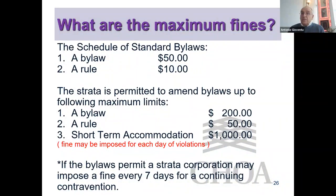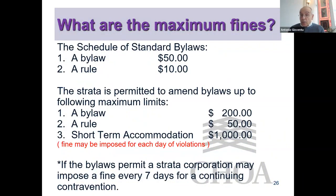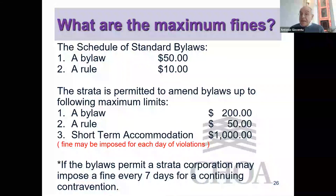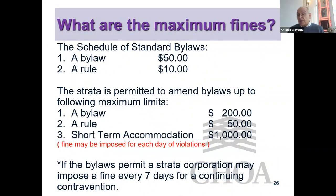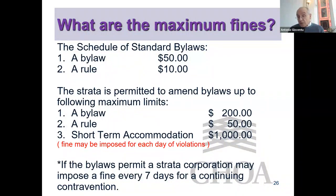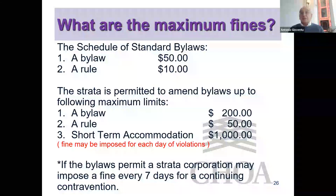Under the standard bylaws of the Act, a bylaw contravention fine is $50 and a rule is $10. You can amend your bylaws — many strata corporations have — so the violation of a bylaw may be up to $200, or a rule up to $50. For short-term accommodations, the fine may be as high as $1,000, which can be imposed for each day of violation. If the bylaws permit, a strata corporation may also impose a fine for a continuing contravention every seven days.